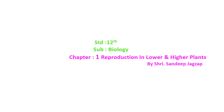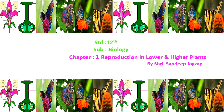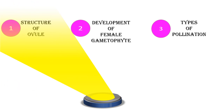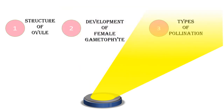Hello students. In the last two sessions, we have learned regarding the types of reproduction, structure of flower, structure of anther, structure of pollen grain, and development of male gametophyte from Chapter 1: Reproduction in Lower and Higher Plants. In this session, we are going to learn three topics: first, structure of ovule; second, development of female gametophyte; and third, types of pollination.